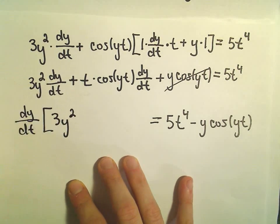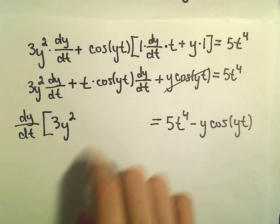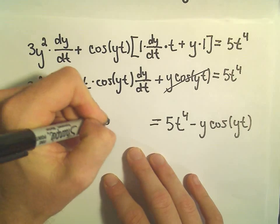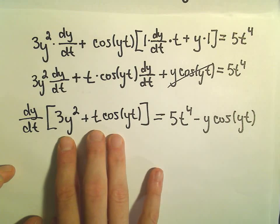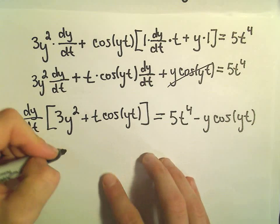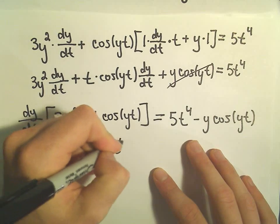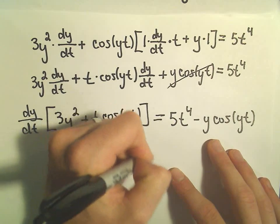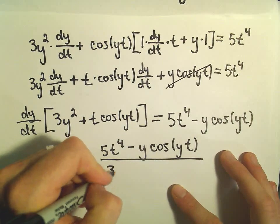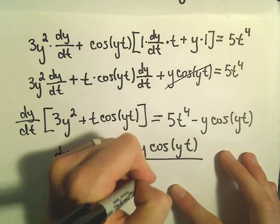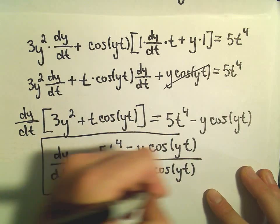Well, let's see. If we pull the dy dt out, we would need a 3y squared, and then if we pull it out from the second term, we would need the positive t times cosine of yt. And now all we have to do is just divide both sides by the 3y squared plus t cosine yt. And we'll get our solution. So dy dt is going to be 5t to the fourth minus y times cosine of yt all over 3y squared plus t times cosine of yt. And we've now got our derivative.